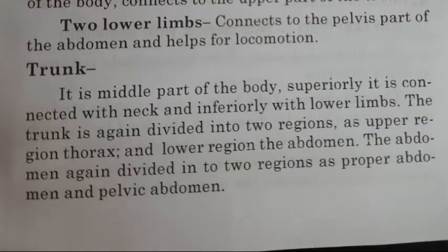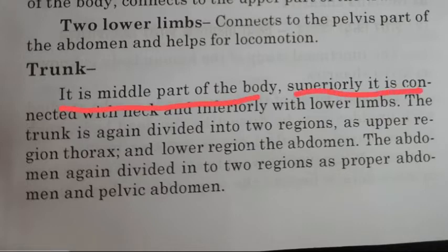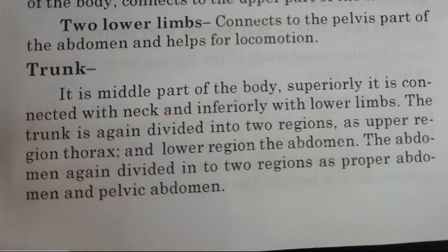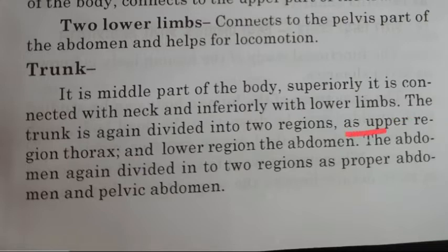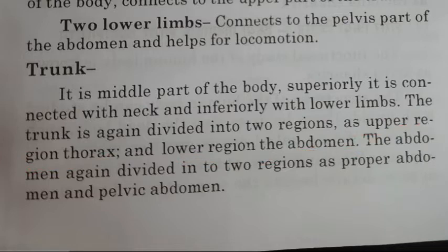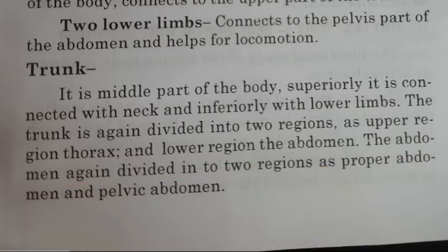The next part is the trunk, that is Madhyamanga — it is the middle part of the body. Superiorly it is connected with the neck, and inferiorly with the lower limbs. The trunk is again divided into two regions: the upper region, thorax, and the lower region, abdomen. The abdomen is again divided into two regions: proper abdomen and pelvic abdomen.